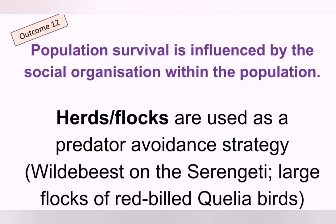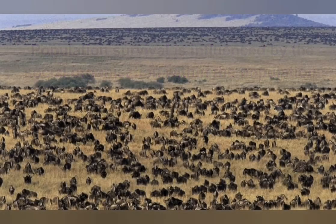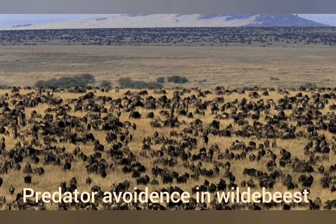Certain animals have a very special way of organizing themselves socially that increases the survival of the entire population. The first way is by forming a herd or a flock. The advantage of herds and flocks is that they avoid predators much more easily — for example, the wildebeest on the Serengeti or flocks of quelea birds. A herd of wildebeest on the Serengeti can be made up of up to 10,000 individual animals.